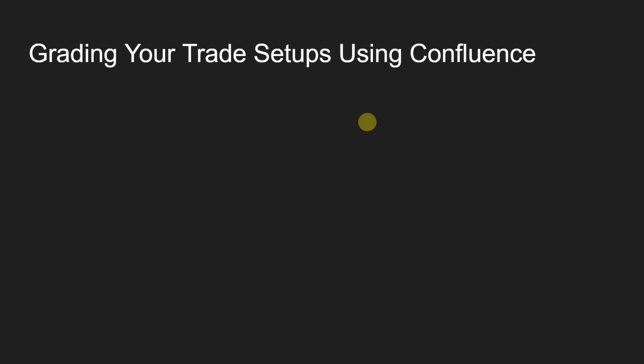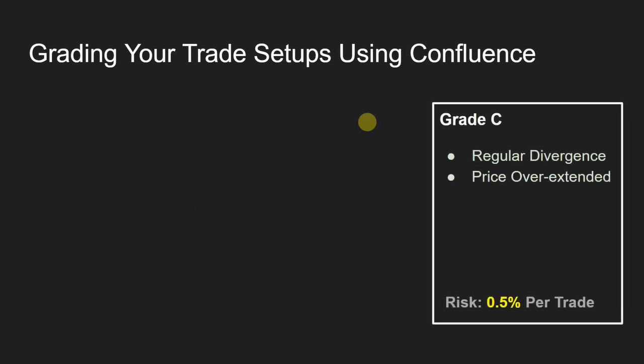I've graded this as if you're taking a test at school in A, B, C. Starting with grade C, which I'm defining as the lowest quality trade setup. Going back to the example from the previous part of this series - you've got regular divergence and RSI overbought on multiple time frames. That to me is a really good setup and it's the core fundamental setup of my Forex scalping course. But if you just had those two elements alone, you would only risk half a percent of your trading account on this particular setup.